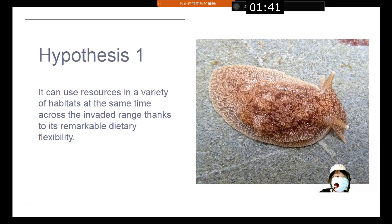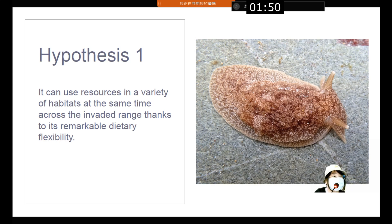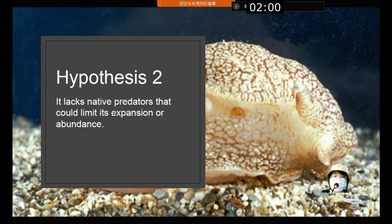These are the hypotheses. The first hypothesis is that it can use resources in a variety of habitats at the same time across the invasive range because of its remarkable dietary flexibility. The second hypothesis is that it lacks native predators that could limit its expansion or abundance.